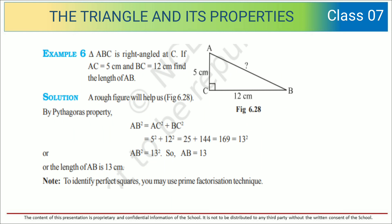Now see the next example. Triangle ABC is right-angled at C. If AC equals 5 cm and BC is 12 cm, find the length of AB.